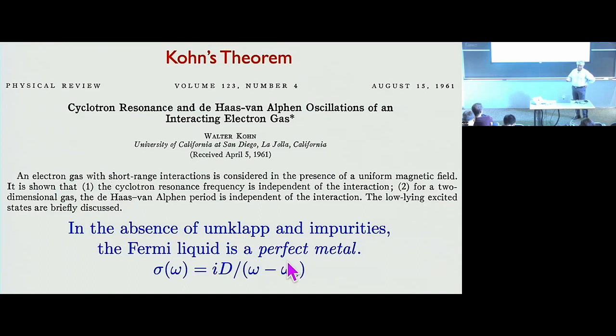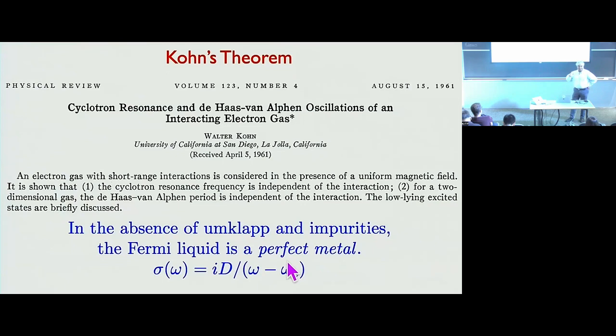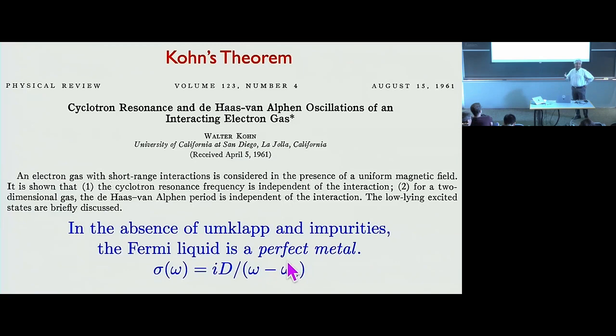The cyclotron frequency is just given by the bare fermion mass — it doesn't get renormalized by interactions. This was strictly shown for a Galilean invariant system, but as we are going to consider long-wavelength interactions which only act near the Fermi surface, whether the system is Galilean invariant or not at the bottom of the band is not crucial. So Kohn's theorem actually applies even in non-Fermi liquids.